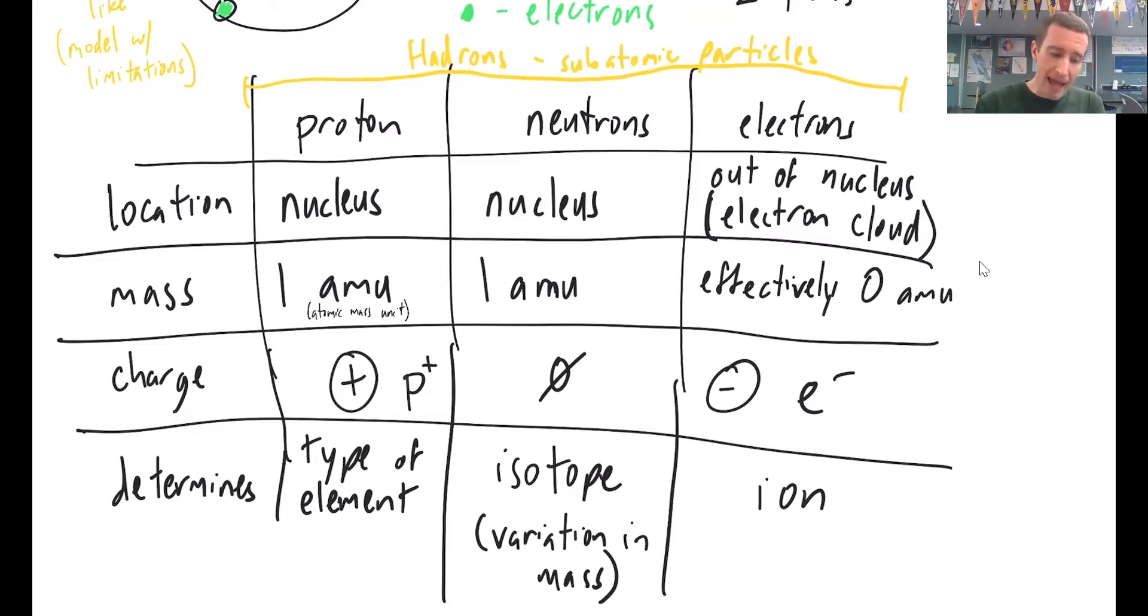In terms of mass, protons and neutrons have mass. We say that they have a mass of one unit and we call that unit the atomic mass unit or AMU. So protons and neutrons have a mass of one AMU, one atomic mass unit. Electrons effectively have zero mass. Technically, it's like one ten thousandth of an AMU or something thereabouts.